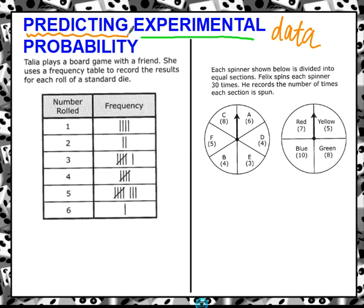This scenario on the left says Talia plays a board game with a friend. She uses a frequency table to record the results. And frequency just means how many times something happened. So she rolled a one and this is a frequency table. They use tallies here, so let's go ahead and make those into numbers.